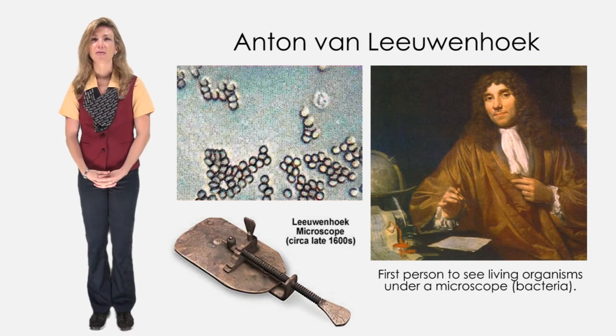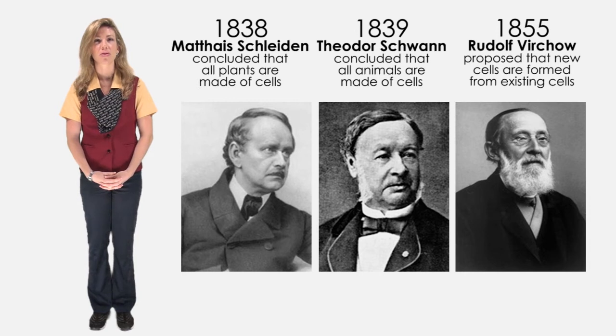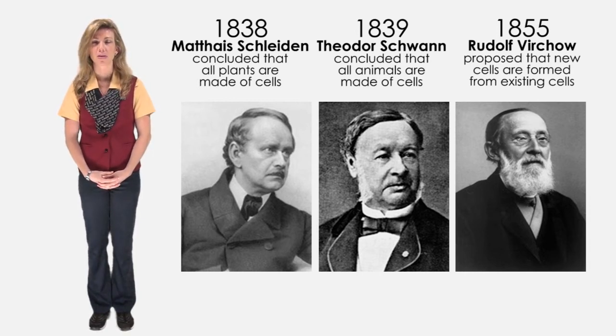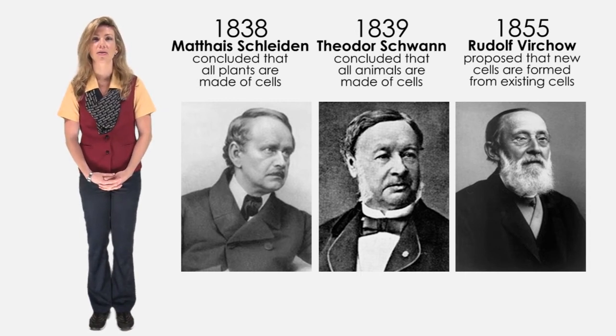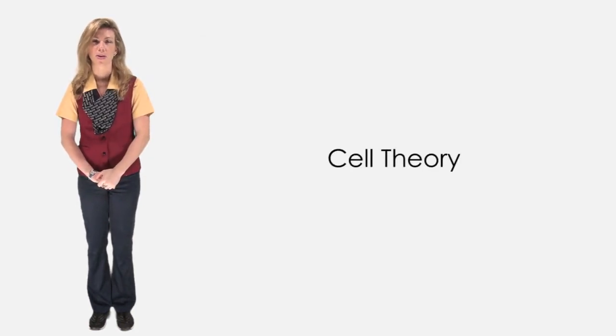Finally, three other men named Schleiden, Schwann, and Virchow came to some conclusions about cells. All plants are made from cells, all animals are made of cells, and all cells come from other cells. Together, these five men formed the cell theory.